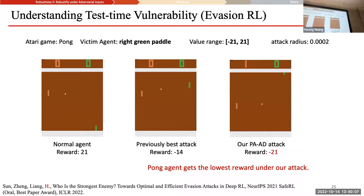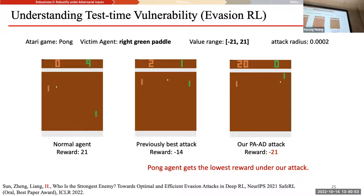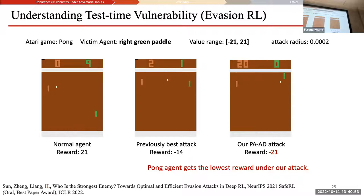This motivates us to think about defenses. In a demo of the Atari Pong game, there is a right green paddle — the victim agent. Under the previous best attacker, the reward is not very good but the agent is still trying, moving and attempting. But under our attacker, you observe imperceptible noise and the agent gets completely stuck there. This is very concerning because RL agents are so vulnerable to very small perturbations.